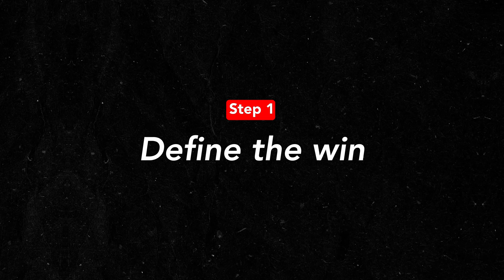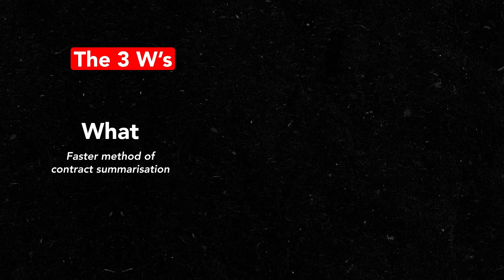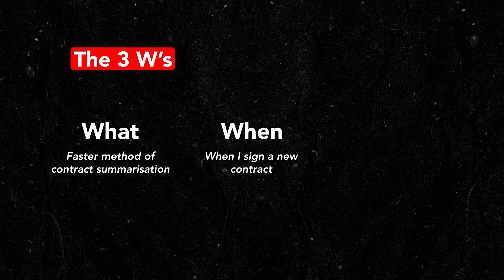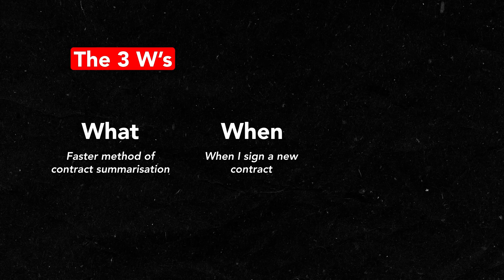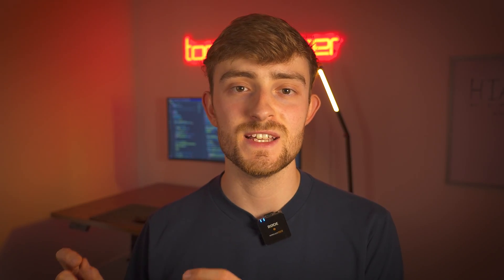Step one: define the win. Automations only succeed when the goal is crystal clear. I use the three W's. What is the desired output? For me this is a faster, more organized method of contract summarization. When should it run? The moment that I sign a deal. And why automate? Well, manually doing this process I was chewing through a minimum of two days of my time per month, so I'd like to see if it can be done a little bit faster.